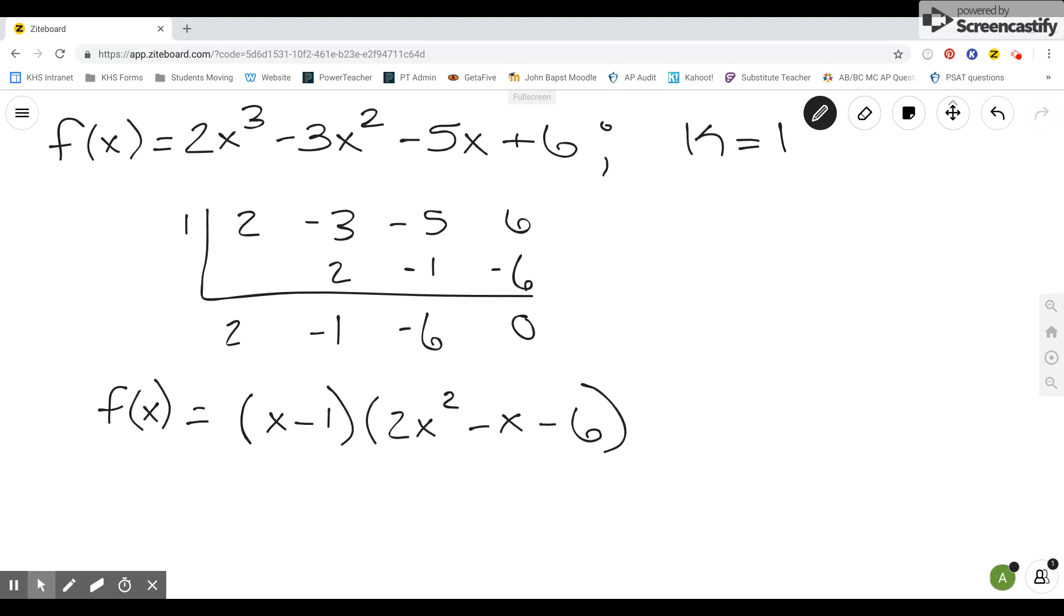So remember, you always take 1 less than the degree of your polynomial you started with. So we started with a third degree. So then using the 2, negative 1, and negative 6, we write our polynomial.